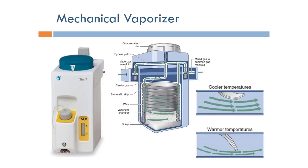Vaporizers can be implemented either mechanically or electronically. The mechanical vaporizer relies on a mechanical device that does not require any power. It takes the input fresh gas and divides it between a bypass path and a path that goes over the inhalation anesthetic. The portion going through the anesthetic picks up a high concentration of anesthetic vapor and then mixes back with the bypass portion, and the summation of the two gives us the concentration that we need.